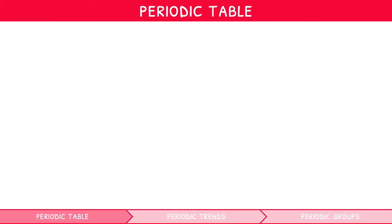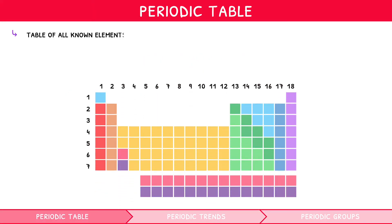The periodic table is a table of all known elements arranged in order of increasing atomic number.